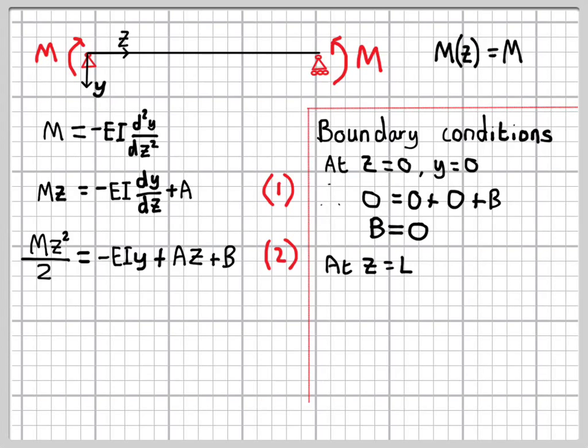We also know in this problem that the right-hand end of the beam has 0 deflection, again, because there's a support there. And so we can write that mathematically as at z equals l, y equals 0. If we put that into equation 2 again, then we quickly find that a is equal to ml on 2.